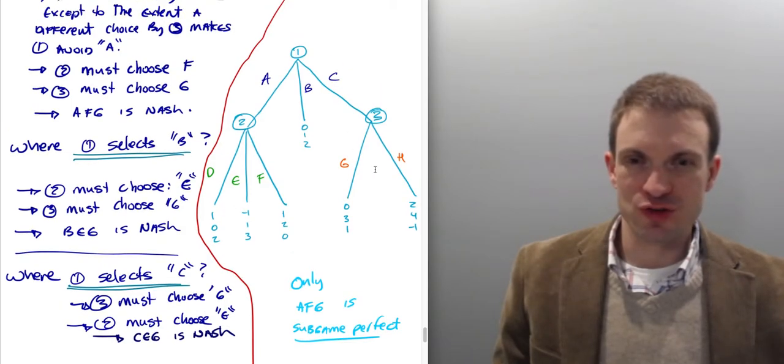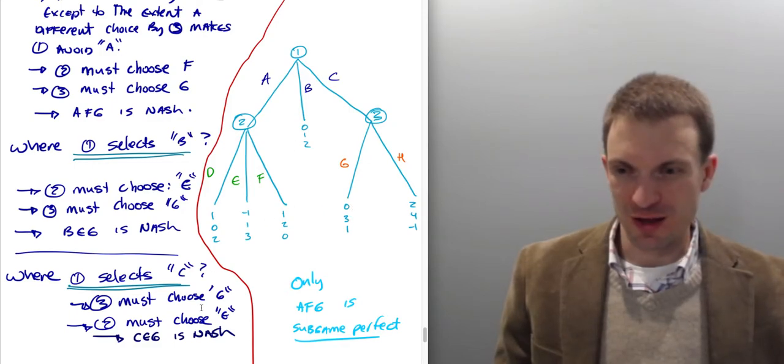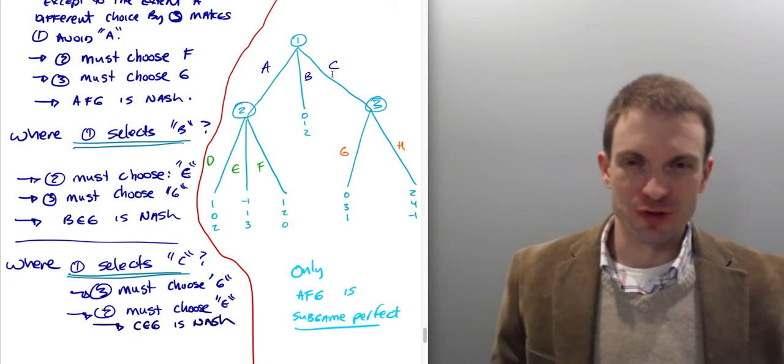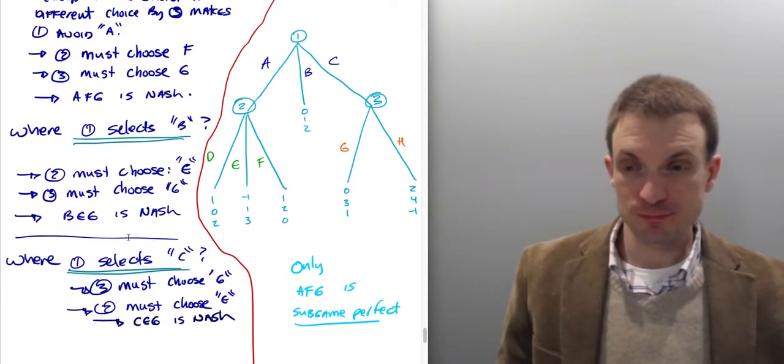And then do we have a Nash Equilibrium where one selects C? Three must select G in this case. So three must select G. If one chooses C, three must choose G. Why? Well, then one can't gain by deviating, and two must choose E. So two would get one, yeah, because otherwise, somebody would have an incentive to deviate.